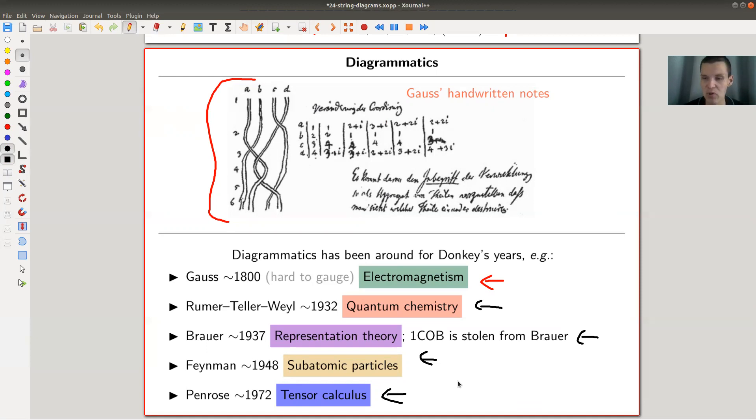You might remember if it's not your first video you watch on category theory on this channel, that I tend to like to play with this 1-Cob category. And it's actually stolen from an old work of Richard Brauer from quite a while ago, from the 30s of the last century. So I stole that and it's kind of impressive that Brauer came up with it because it was the time,